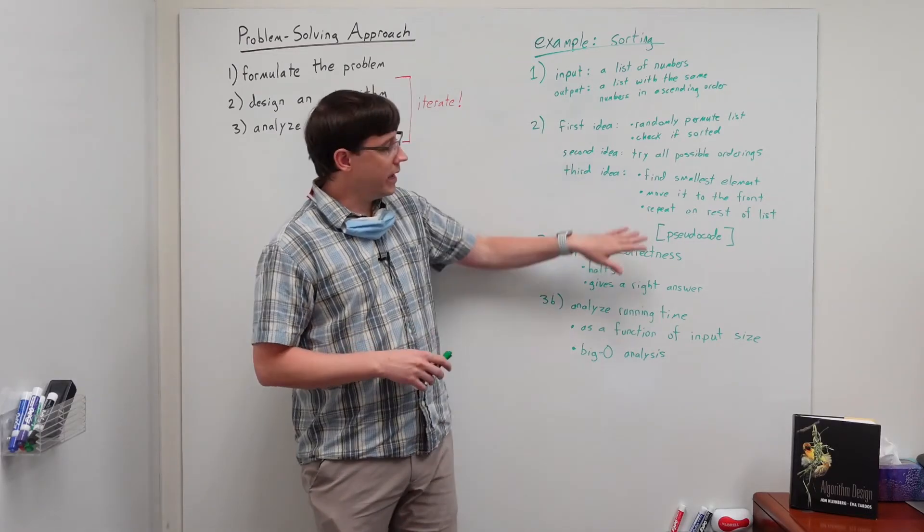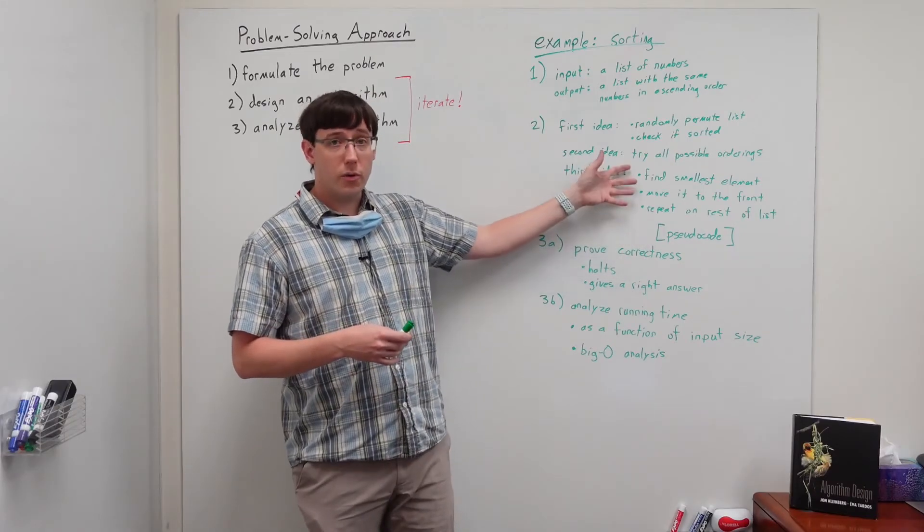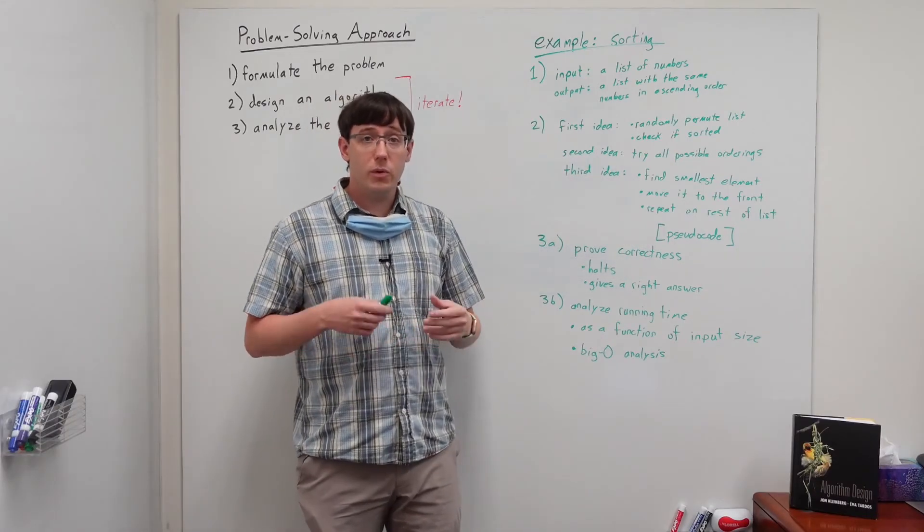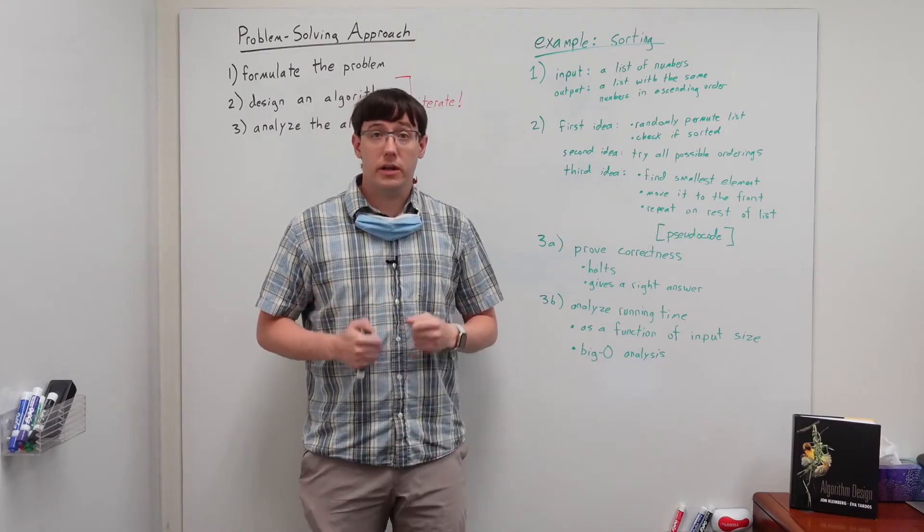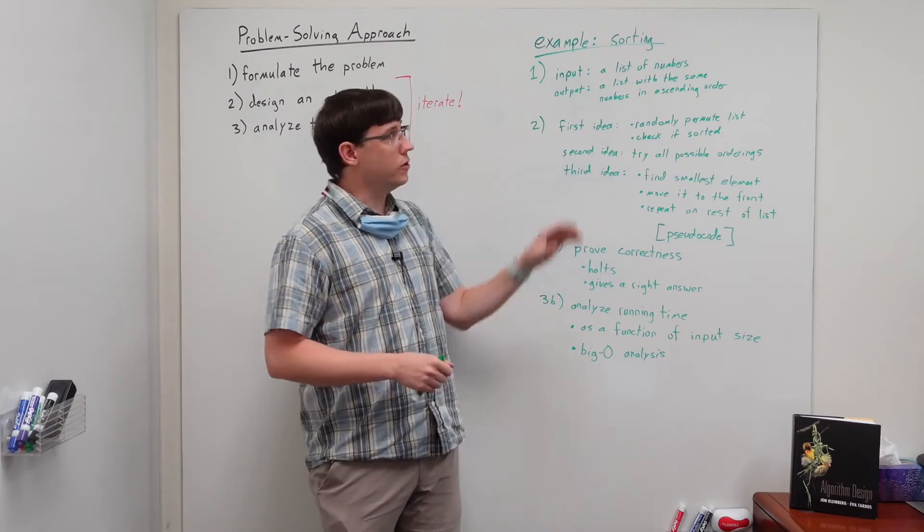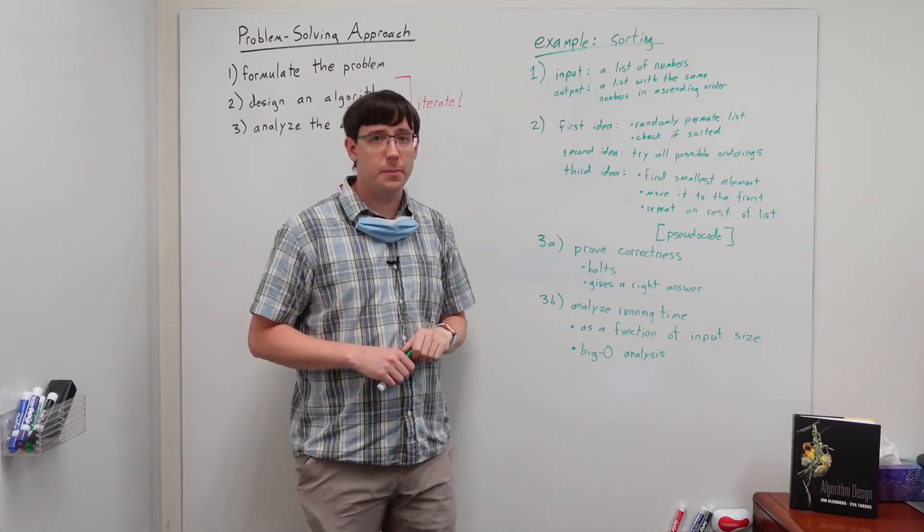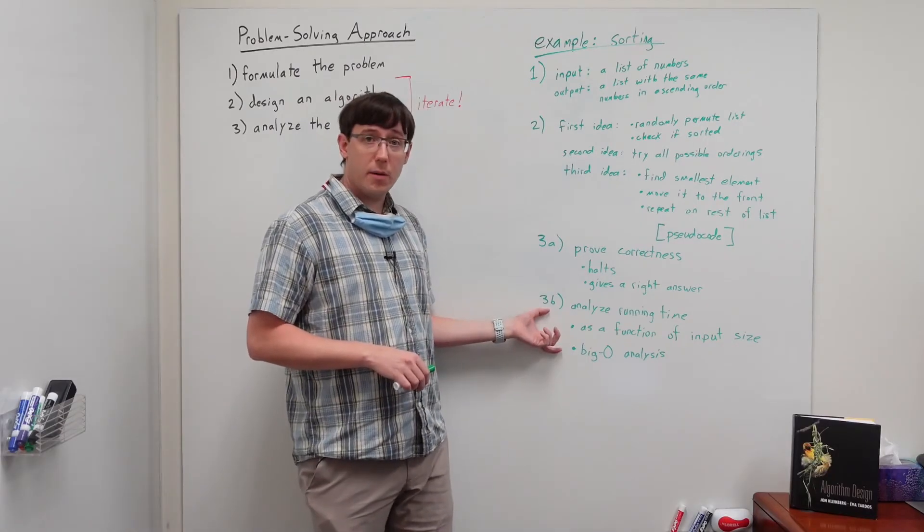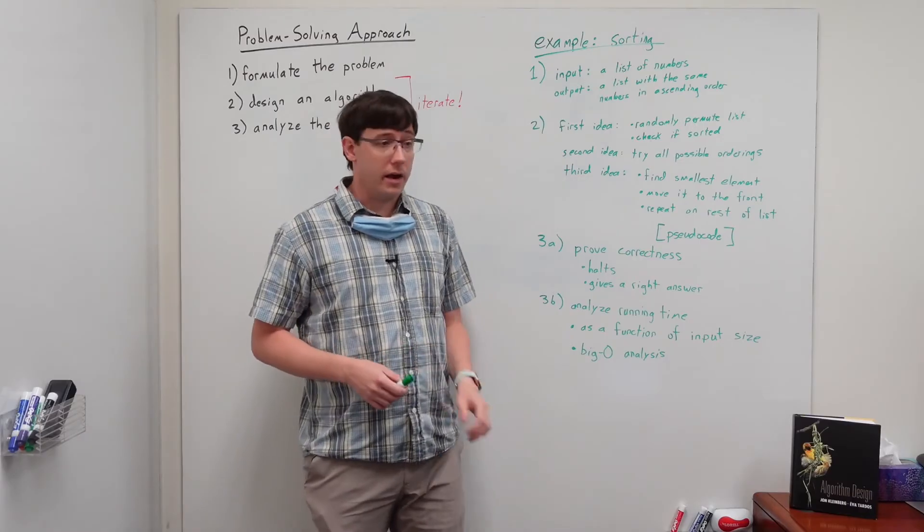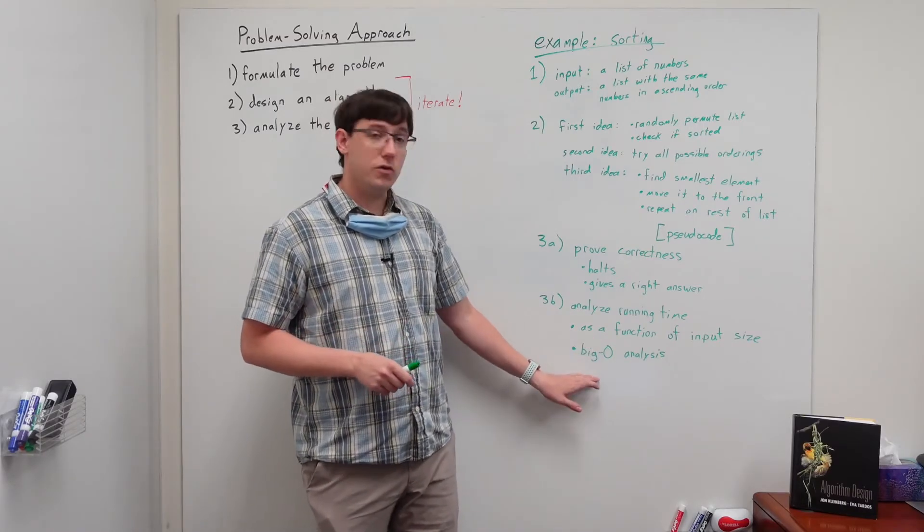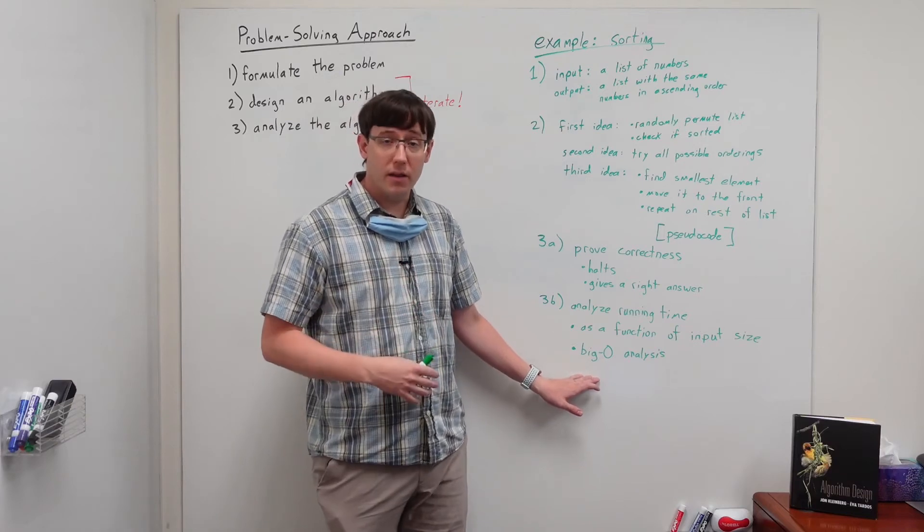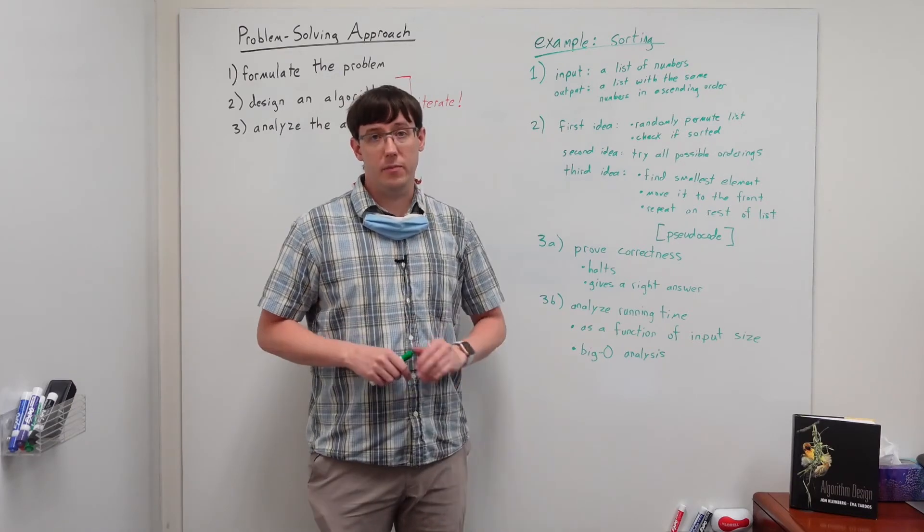In our first class, we will actually write out the pseudocode for selection sort, and we will see how we can prove that selection sort gives us a correct answer to our sorting problem. And starting in week two, we will go into much more depth on how we can describe the running time of our algorithms, and do formal big O analysis of those running time functions.